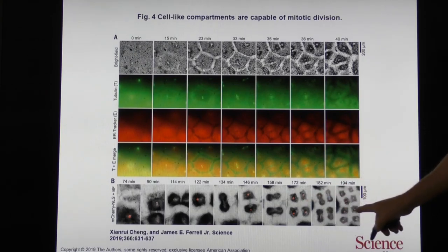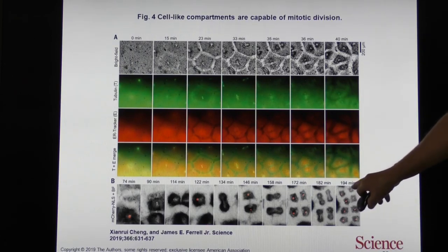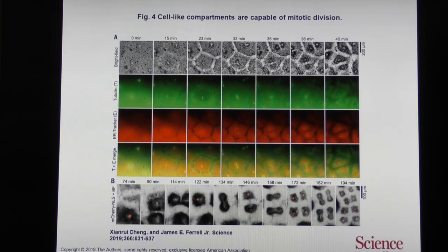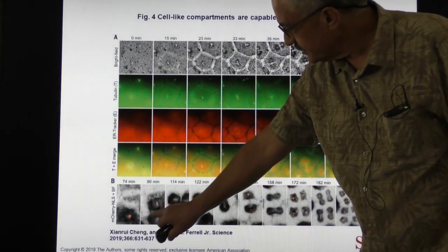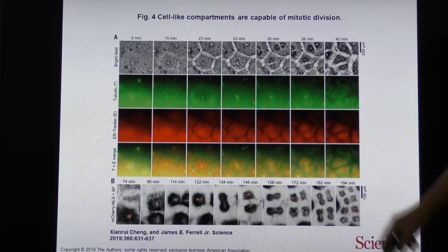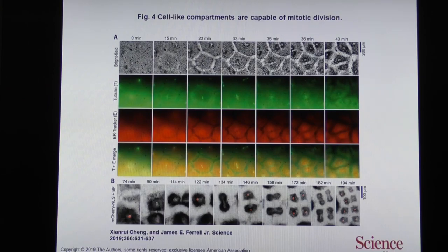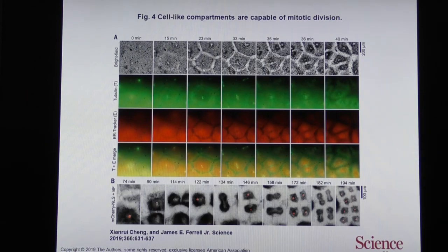All four cells in the image divide, and it fills the slide. The timeline is 194 minutes — about three hours. The daughter cells are a little smaller than the original. The ATP is in the cytoplasm — part of what they curated. So eventually it's got to stop, but it must not take a lot of ATP because it keeps going for several divisions.